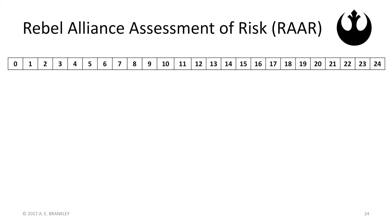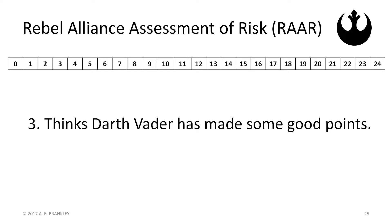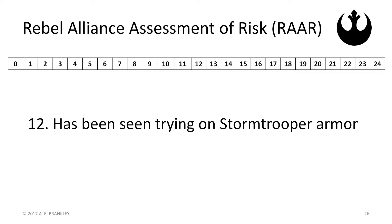Their tool is called the RAR — the Rebel Alliance Assessment of Risk. There are 12 items, each scored 0 to 2, with a total score ranging from 0 to 24. Examples of items are: number 3 is 'thinks Darth Vader has made some good points,' and item 12 is 'has been seen trying on stormtrooper armor.'